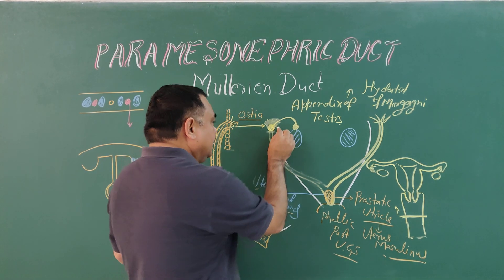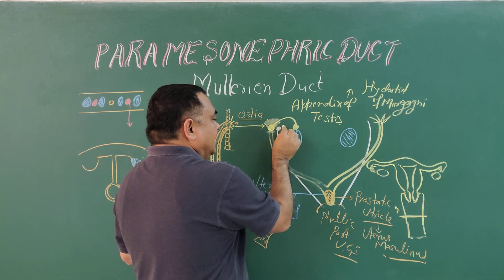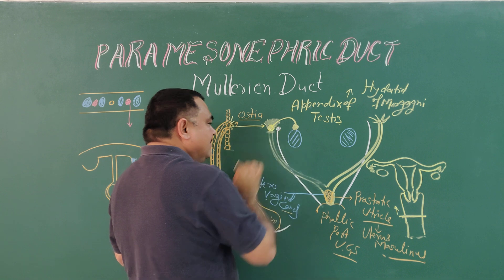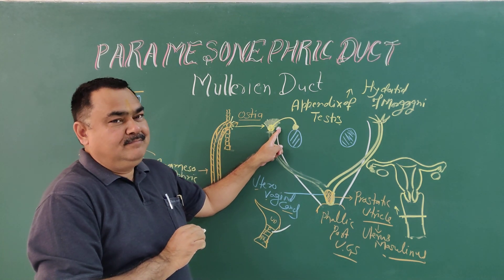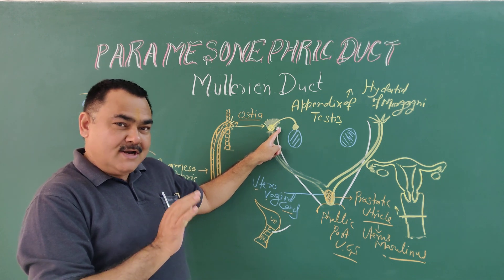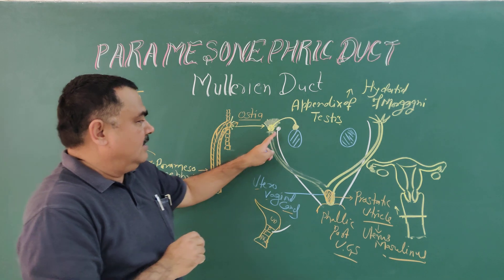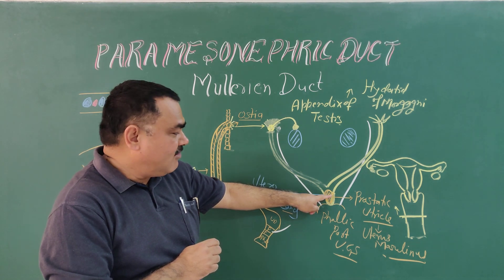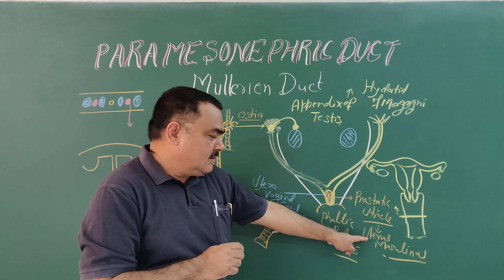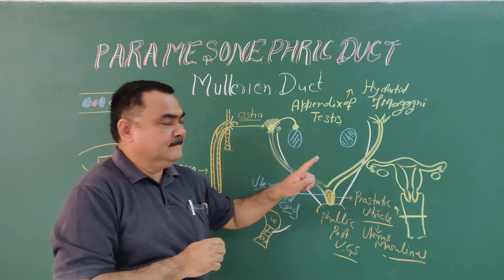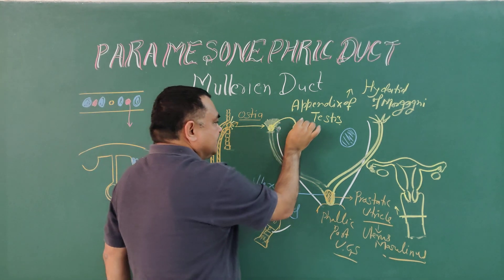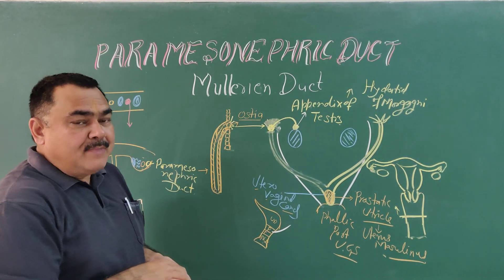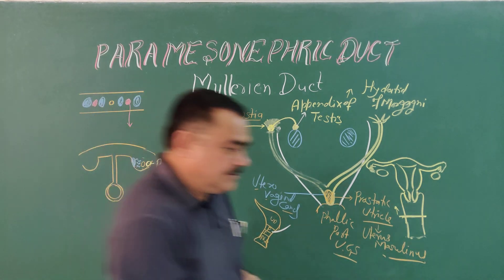The cranial-most part of the mesonephric duct, in the male, forms the appendix of the epididymis. So remember: appendix of the testes is the cranial-most part of the paramesonephric duct, and appendix of the epididymis is the cranial-most part of the mesonephric duct. In the male, the paramesonephric duct forms the prostatic utricle (uterus masculinus) and the appendix of the testes. This is all about the paramesonephric duct or Müllerian duct. Thank you.